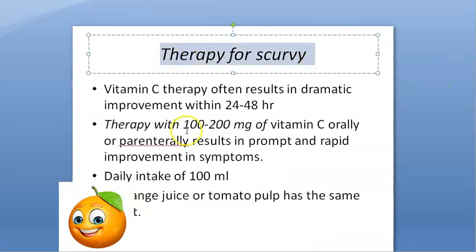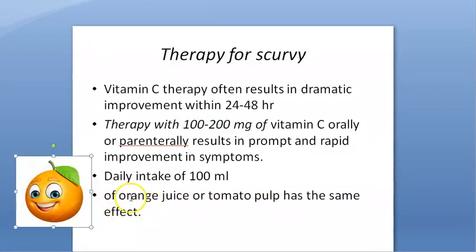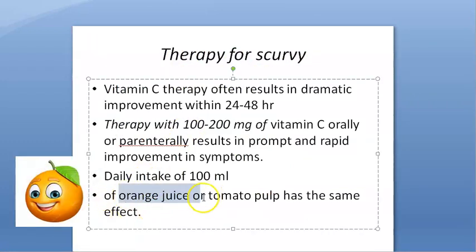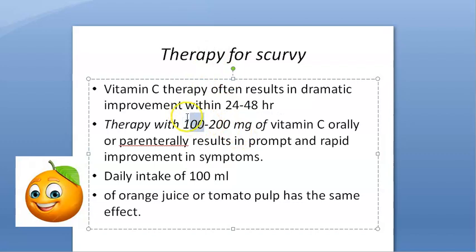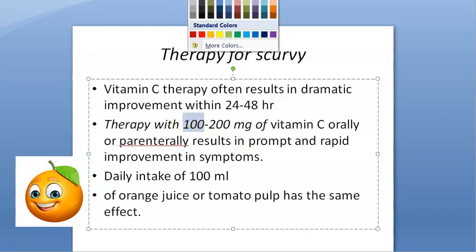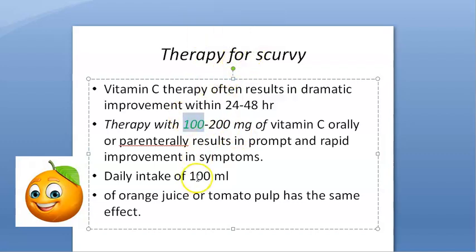What is the therapy for scurvy? Just give them 100 ml of orange juice every day or 100 mg of vitamin C orally. This is for children — we are talking about children.